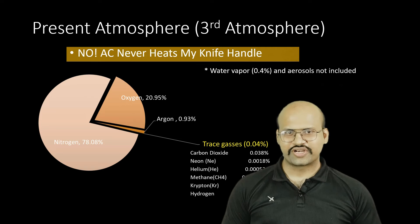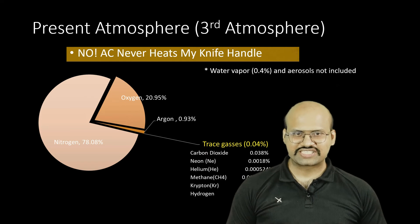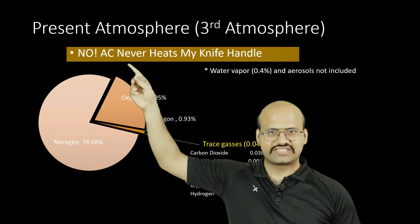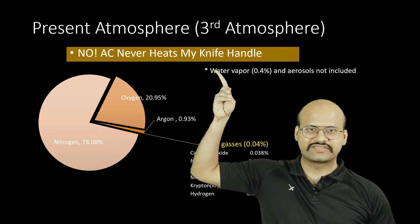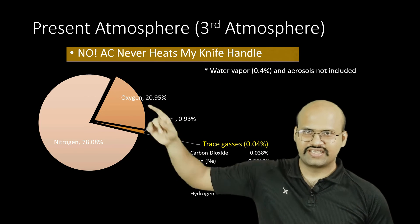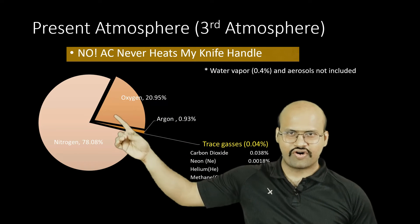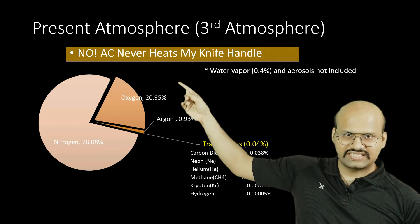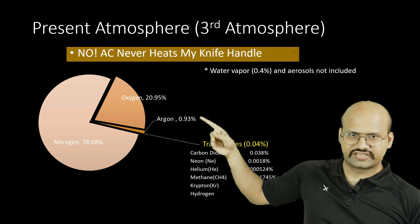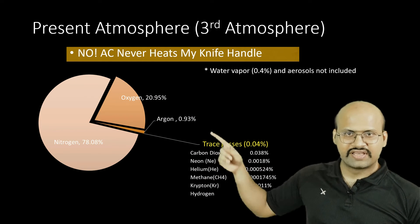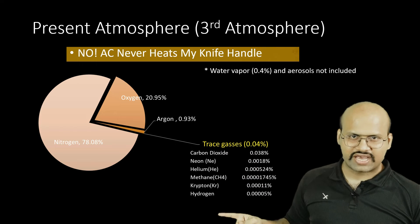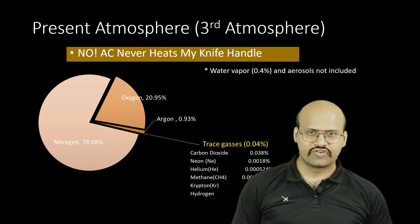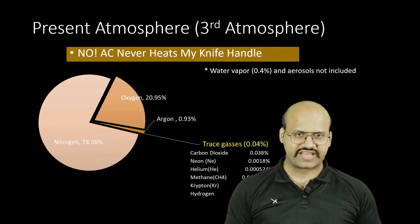If you want to remember the order of the percentage of gases, you can use this mnemonic: 'No AC never heats my knife handle.' N stands for nitrogen, O for oxygen, A for argon, C for carbon dioxide, NE for neon, HE for helium, M for methane, K for krypton, and H for hydrogen. If you remember this sentence, you will be able to remember the order of the gases.